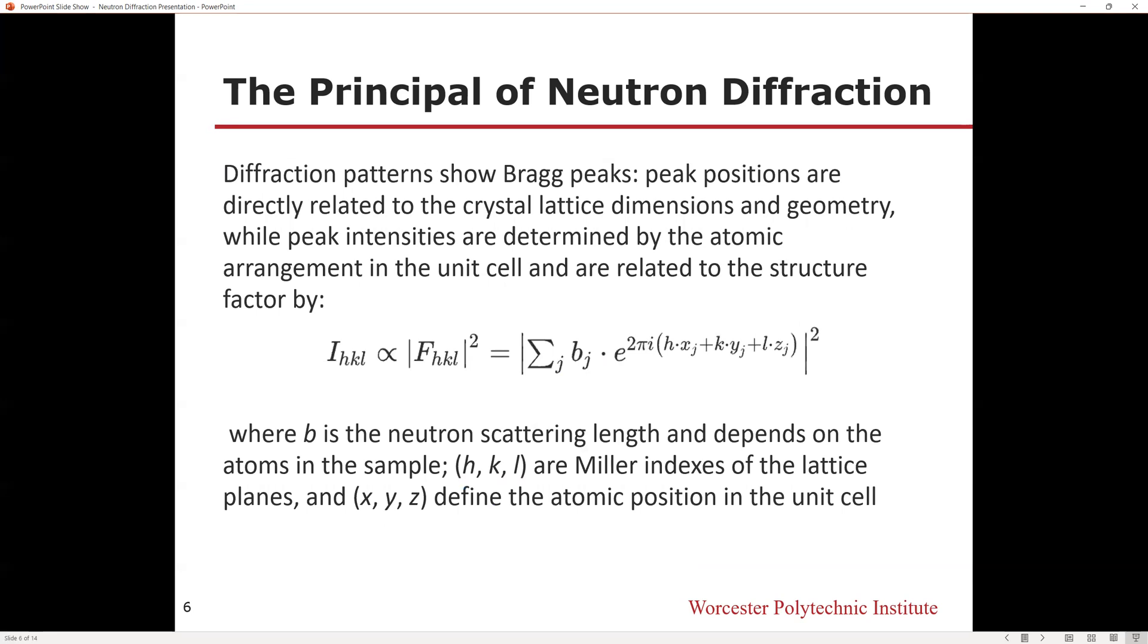The diffraction intensity of neutron diffraction is similar to X-ray diffraction. The diffraction pattern shows Bragg's peaks. Peak positions are directly related to the crystal lattice dimension and geometry, where peak intensities are determined by the atomic arrangement in the unit cell and are related to the structure factor. In this relationship, B is the neutron scattering length and depends on the atomics in the sample. HKL are Miller indices of the lattice plane, and XYZ defines the atomic position in the unit cell.